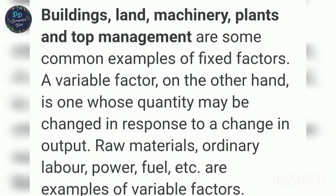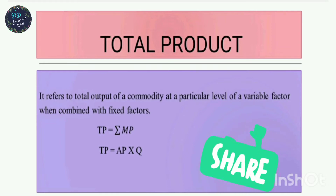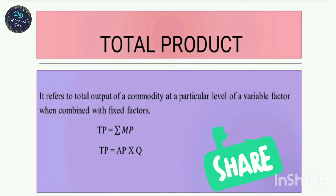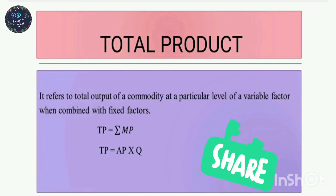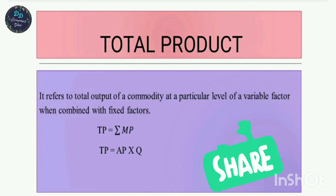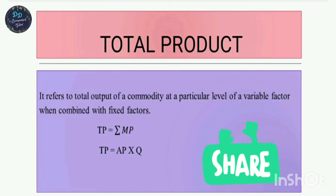Now, what is TP — Total Product? Total Product means the total output of a commodity at a particular level of variable factor combined with the fixed factor. In simple words, it is the quantity of goods produced by a firm during a given period of time with the help of given inputs.